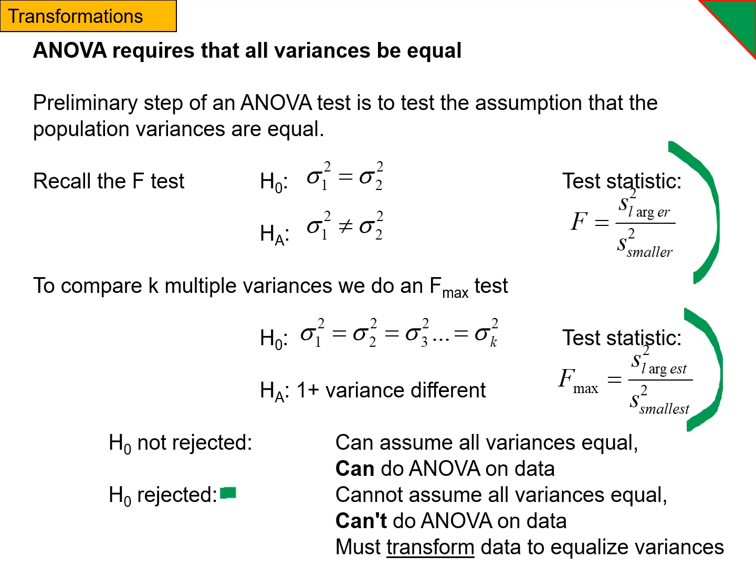If we reject the null hypothesis, however, we can't do the ANOVA. And I said we had to transform our data in order to equalize variances. What does that mean, and how does that work?